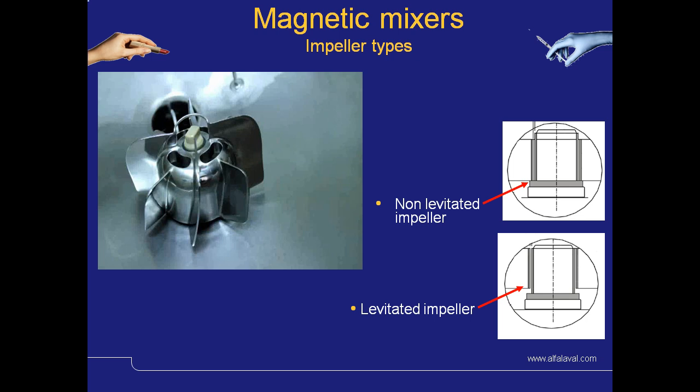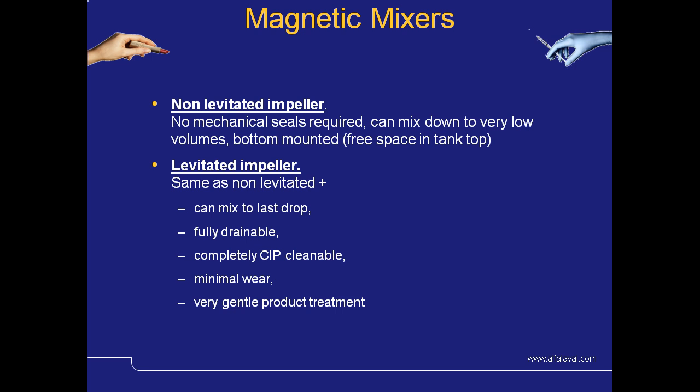With magnetic impellers, there are two distinct types: the non-levitated impeller and the levitated impeller. This video shows the benefits of the levitated impeller — there is no contact at all between the impeller and the bearing. A non-levitated impeller has no mechanical seals, can mix down to very low volumes and is bottom mounted. With the levitated impeller, you have the same benefits as the non-levitated, but in addition it can mix down to the last drop, is fully drainable, is completely CIP cleanable, and gives minimal wear and very gentle product treatment.